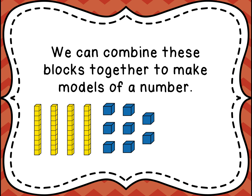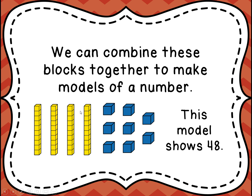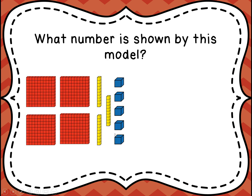Now we can combine these blocks together to make models of a number. If I take a look, I can see that there are four of the tens rods, so we know that there's a four in the tens place. And there are eight of the ones. So this model shows the number forty-eight — four in the tens place, eight in the ones place.